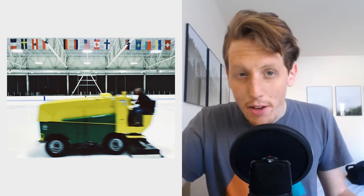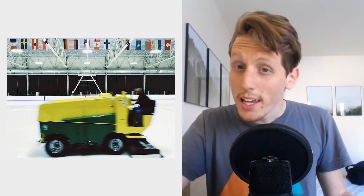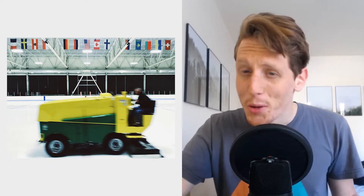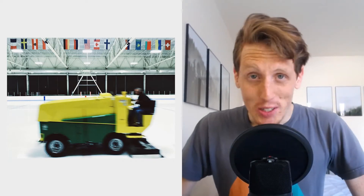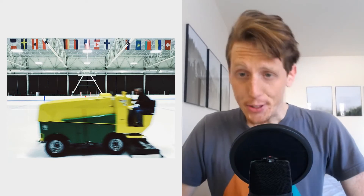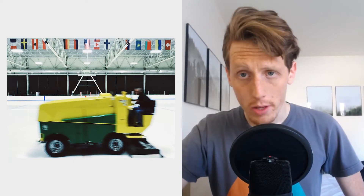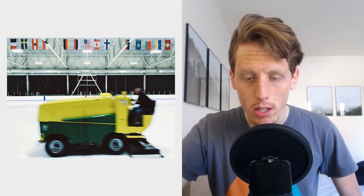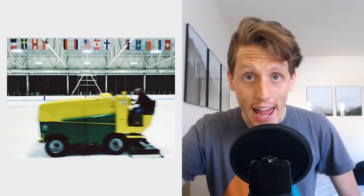I looked up the definition for ice skating rink, and this was interesting to me: an ice rink is a frozen body of water and/or hardened chemicals where people skate. Hardened chemicals — the more I live on this earth, the more confused I get. This photo was taken with my iPhone. I was at a party, so I did not have my full camera setup with me.